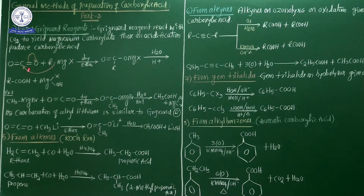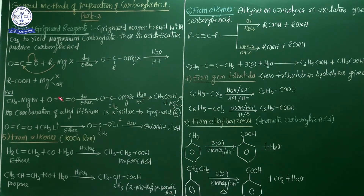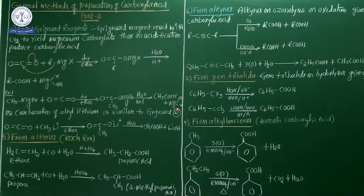The above equation is the general representation. One example: methyl magnesium bromide (CH₃MgBr) is the Grignard Reagent. Methyl magnesium bromide treated with carbon dioxide in the presence of dry ether gives an intermediate addition product. On acidification or hydrolysis with water, finally acetic acid and MgOHBr are formed. This is a very important preparation method of carboxylic acid using the Grignard Reagent.